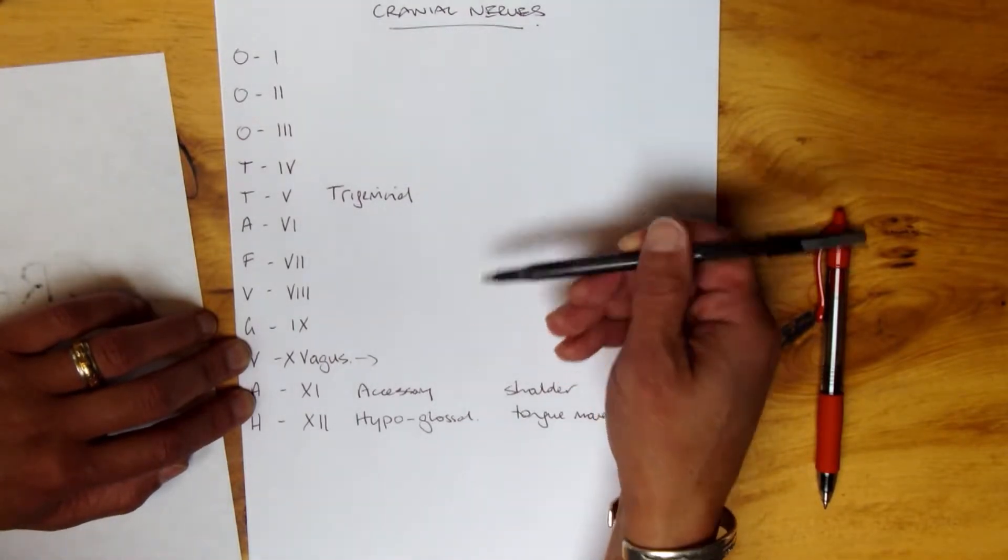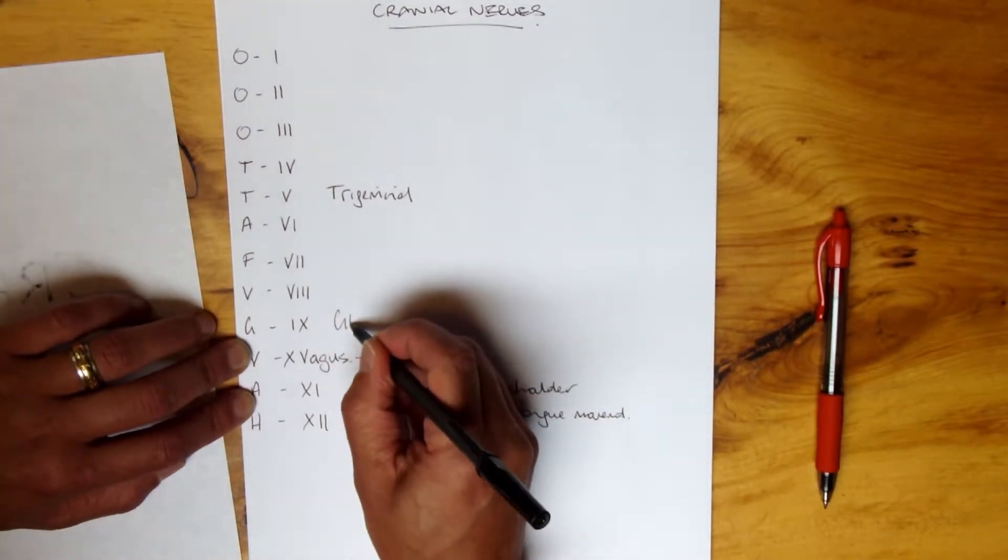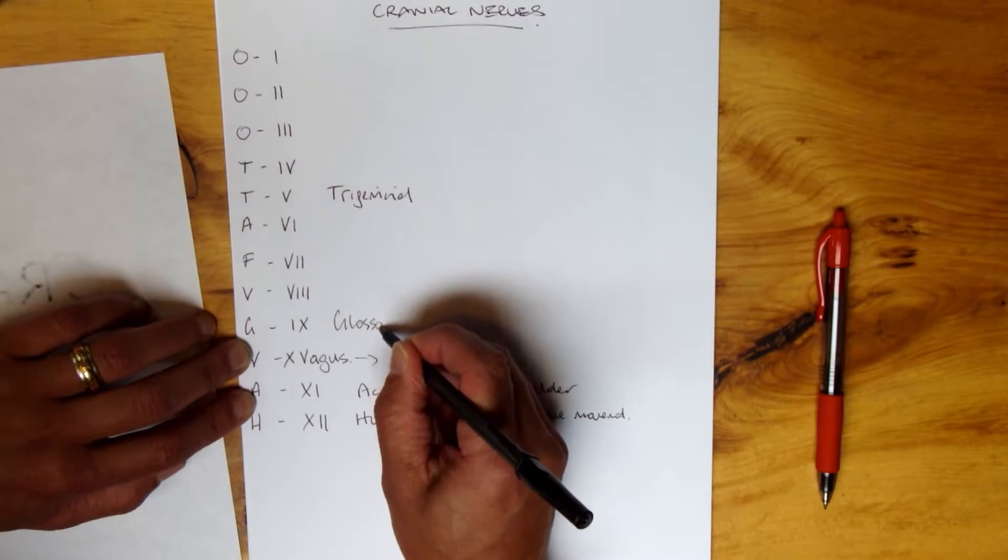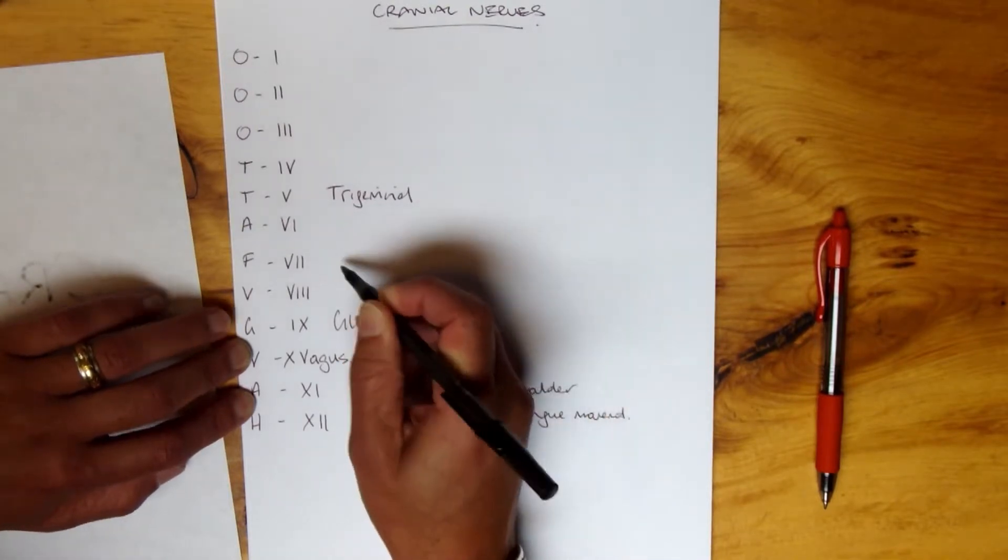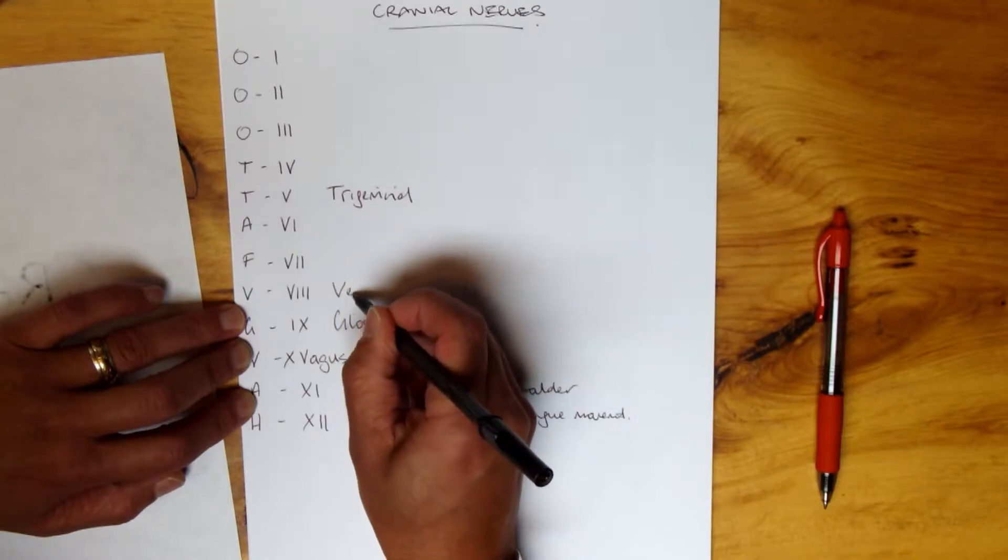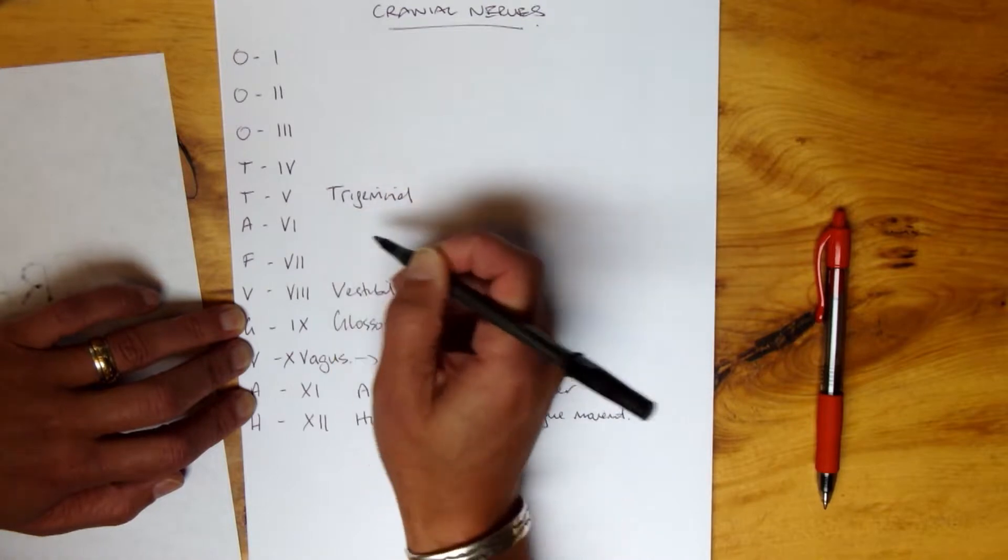G, think of gloss or glossopharyngeal, right, the swallowing mechanism. V is vestibulocochlear.